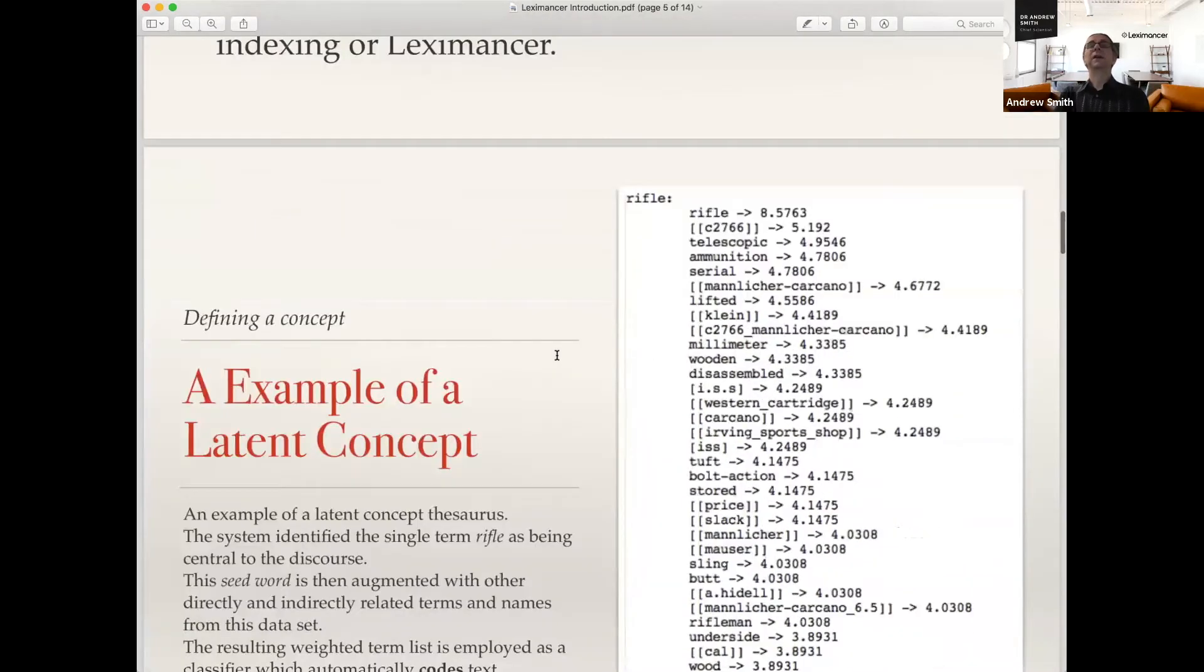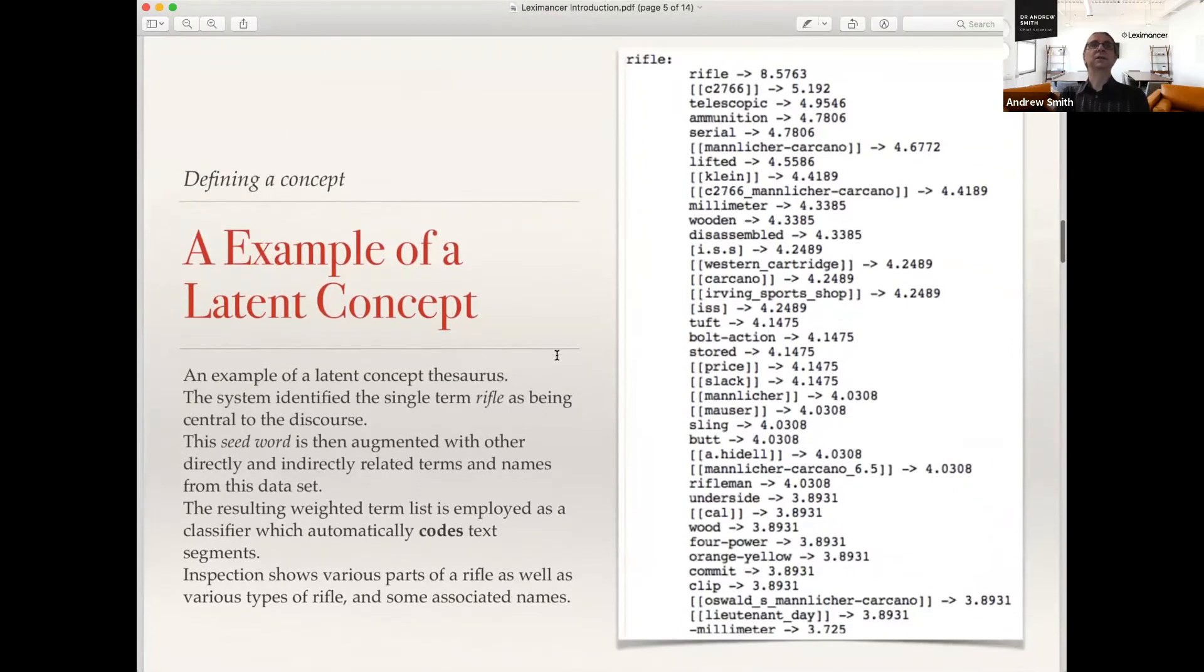Leximancer does latent content or latent concept discovery. It extracts concepts from the text. Here's an example of a concept that's been extracted from a particular document. This is capturing the idea of a rifle. How does it capture it? It's a collection of words with weights which predict the idea of a firearm in this particular data set.